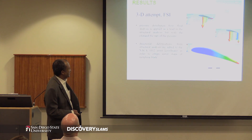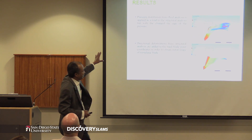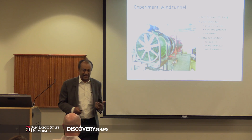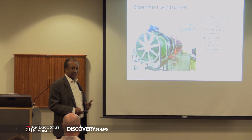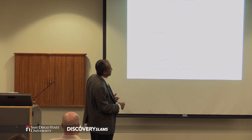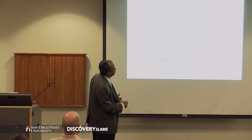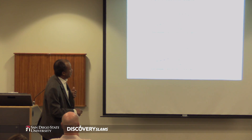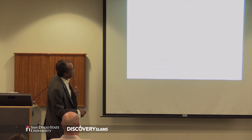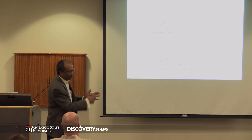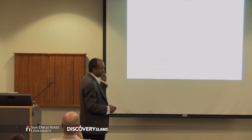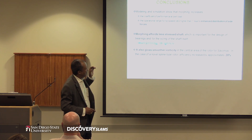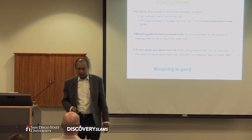All these are numerical results, and we tested our system in a wind tunnel which we designed at San Diego State using a sewer pipe. These are the results: the rigid traditional blade is the blue, and the red is the flexible blade that we designed. Not only does it have better efficiency, but it also has a wider range of operation. Simply put: flexible turbines are good, and morphing is good.